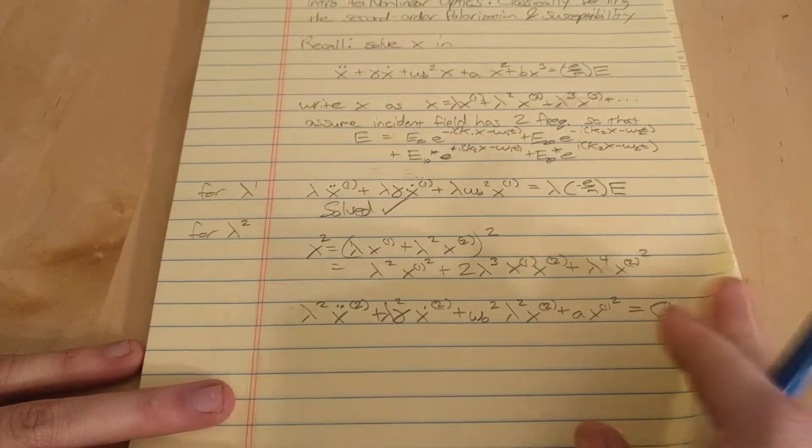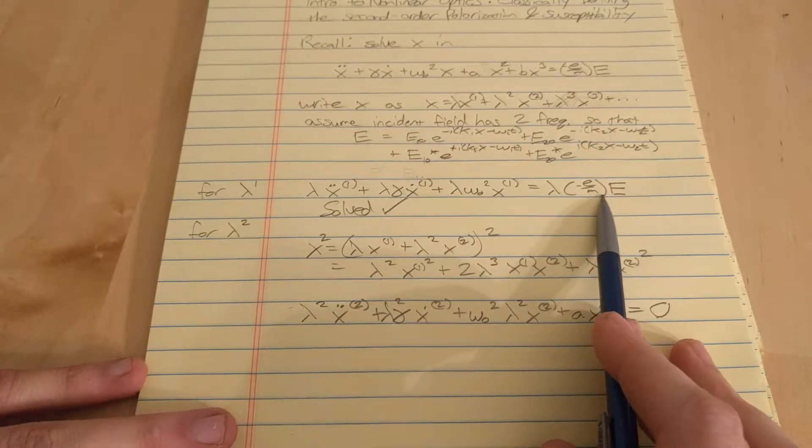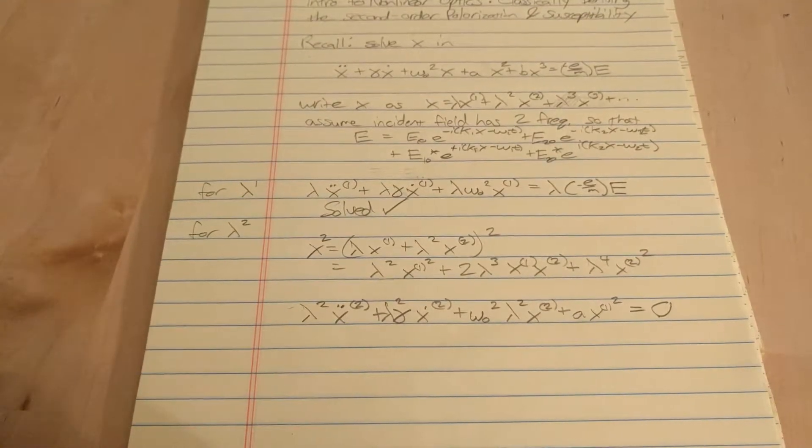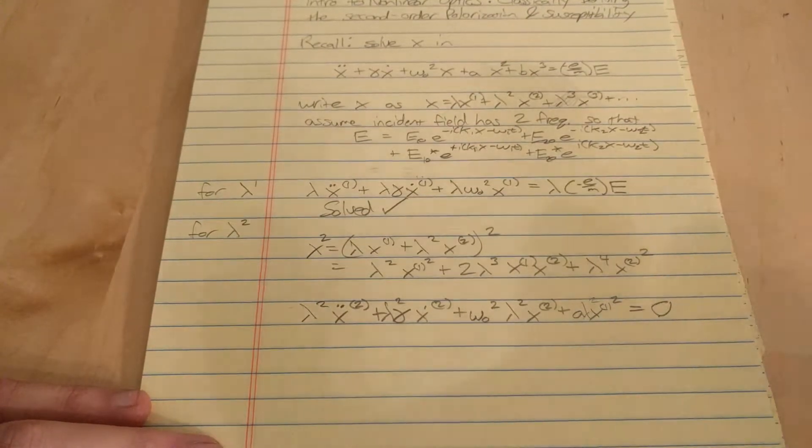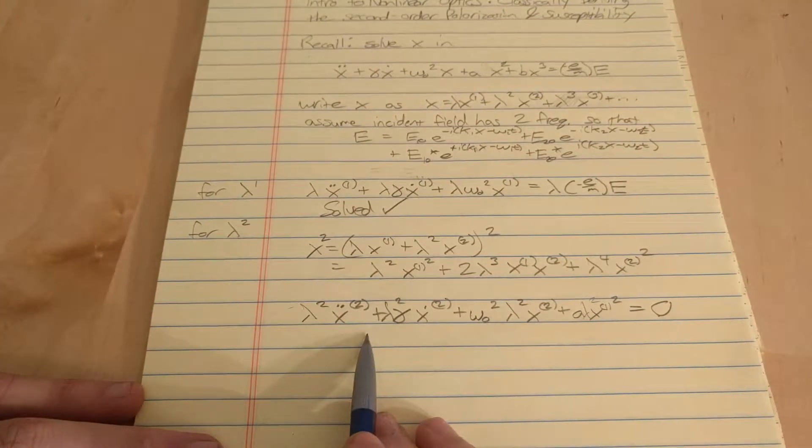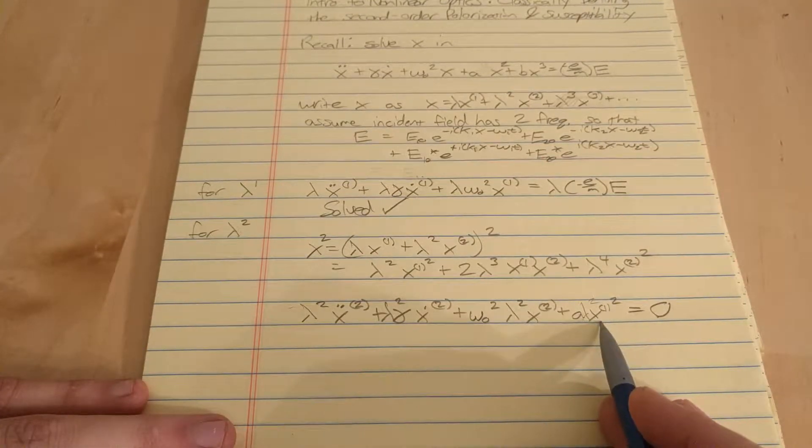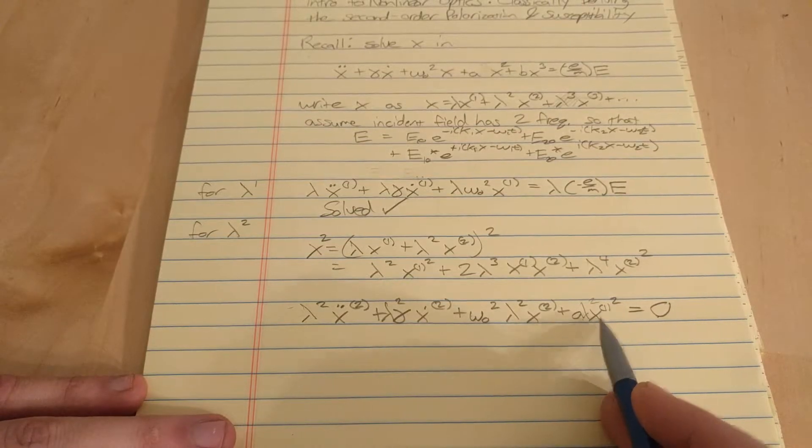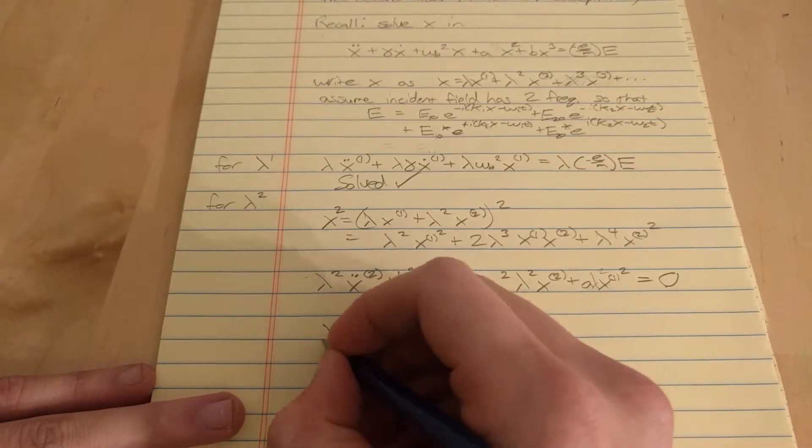All lambda squared goes away, and we're also assuming two frequencies. We already know X1 because we found that from the previous video, and that is this.